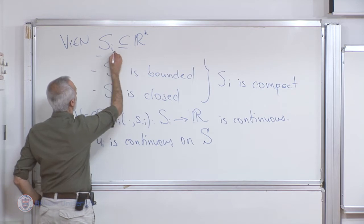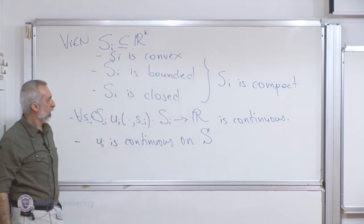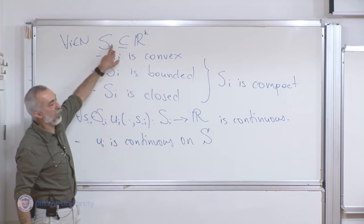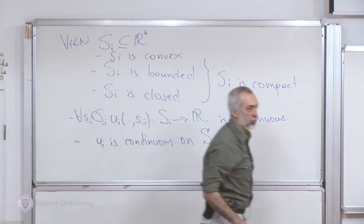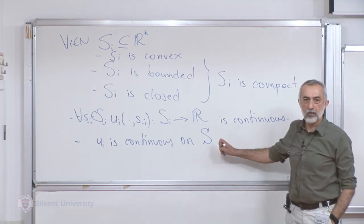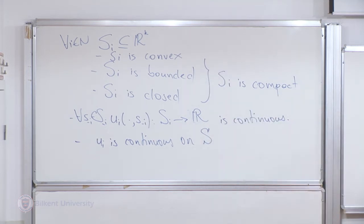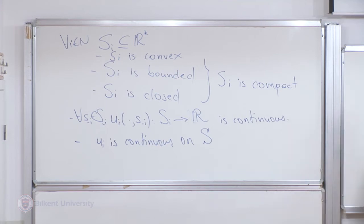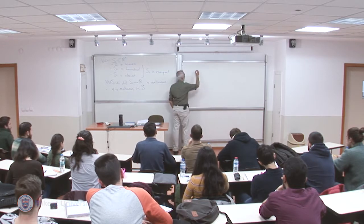Whenever we talk about closeness and boundedness, we're talking about the Euclidean space with the usual metric. Whenever we're talking about convexity, we're talking about algebraic properties — the Euclidean space with the usual vector addition and scalar multiplication. So that's where we stopped last lecture. If the set was not convex, we could easily have nice-behaved best responses that did not intersect. If it was not compact, we could easily have best responses that did not intersect. So, last condition we need.